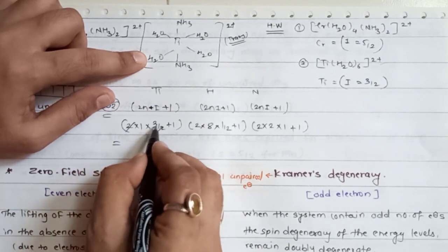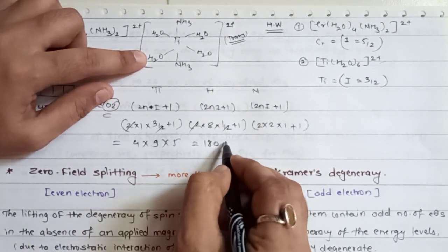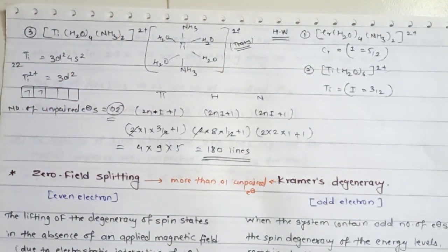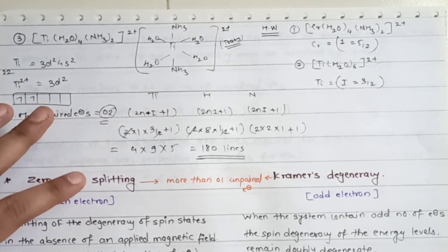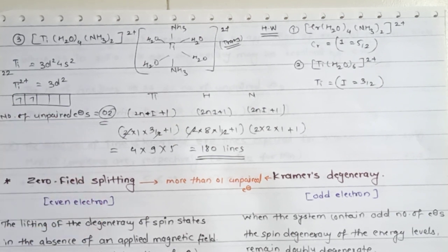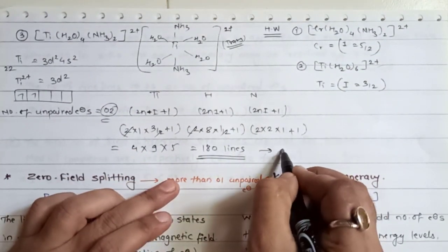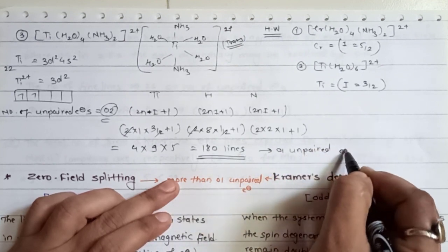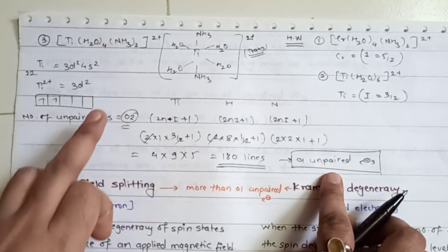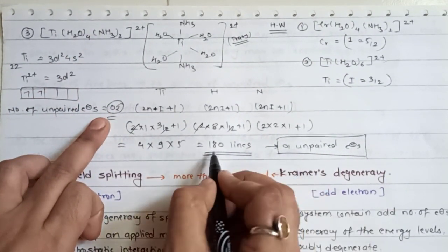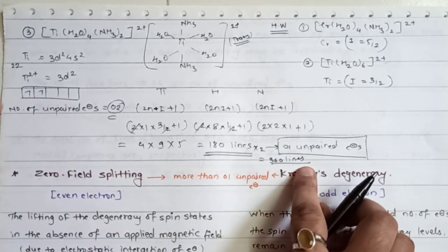Calculation: for titanium (1 atom, I = 7/2): 2 × 1 × (7/2) + 1 = 8. For hydrogen attached to oxygen (8 atoms, I = 1/2): 2 × 8 × (1/2) + 1 = 9. For nitrogen (2 atoms, I = 1): 2 × 2 × 1 + 1 = 5. Total = 8 × 9 × 5 = 360. But since there are 2 unpaired electrons, multiply by 2 to get 360 lines as the final answer.